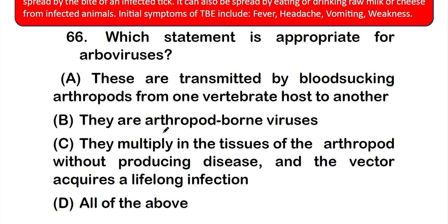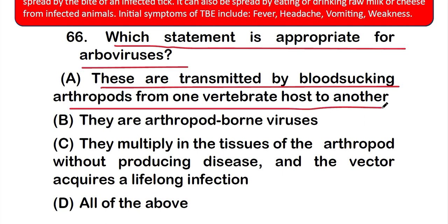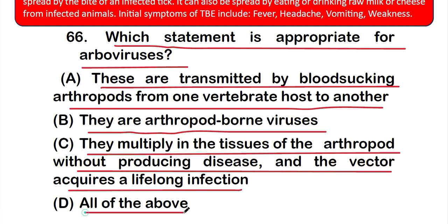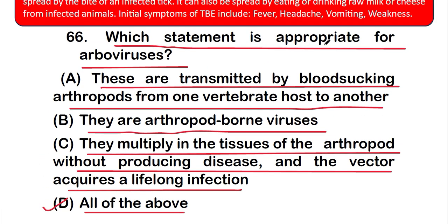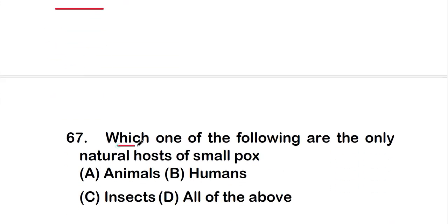Question number 66: Which statement is appropriate for arboviruses? Option A: They are transmitted by blood-sucking arthropods from one vertebrate host to another. Option B: They are arthropod-borne viruses. Option C: They multiply in the tissue of arthropods without producing disease, and the vector acquires a lifelong infection. Option D: All of the above. The correct answer is option D — all statements are correct about arboviruses.